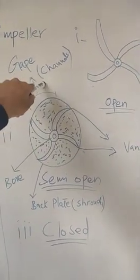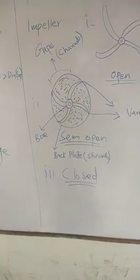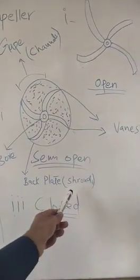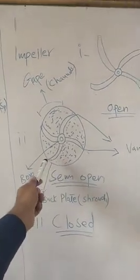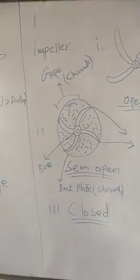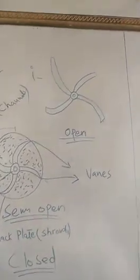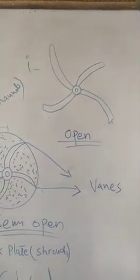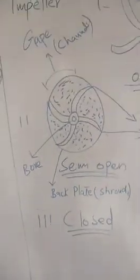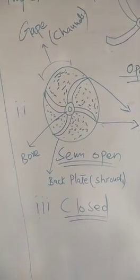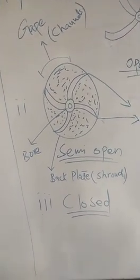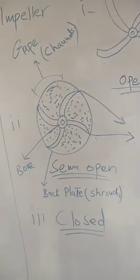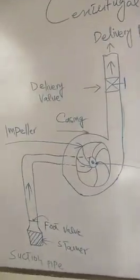The gap between the vanes is called channels. The plate on which the blades (vanes) are mounted is called a shroud. In a semi-open impeller, there is one plate at the back, called the shroud. In an open impeller, there is no shroud — only vanes and the bore. In a closed impeller, there are two shrouds, i.e., two plates, with the vanes positioned between them, making the vanes not visible from outside.